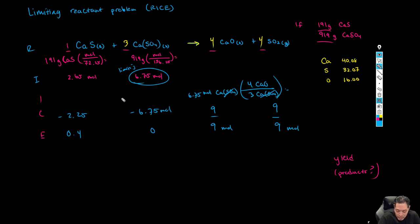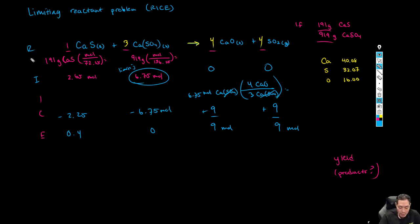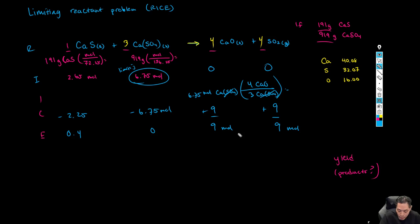Since we are producing these compounds, the change is positive. Initially we had zero amounts of each product. So the final result is nine moles of CaO and nine moles of SO₂. We had the balanced equation as our recipe, identified the limiting reagent, determined the change, and now have the end amounts. To convert to grams, multiply by the molar mass of each product.